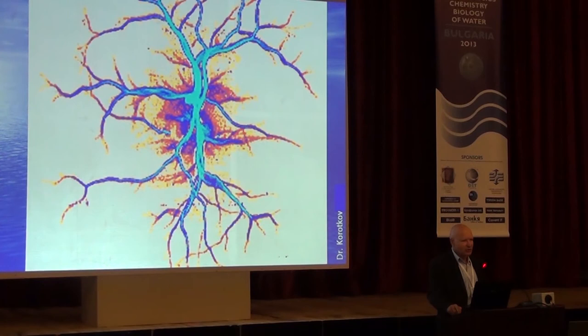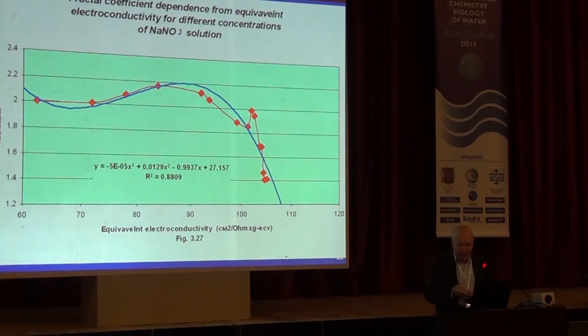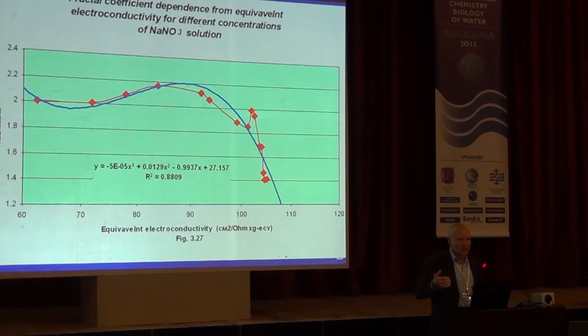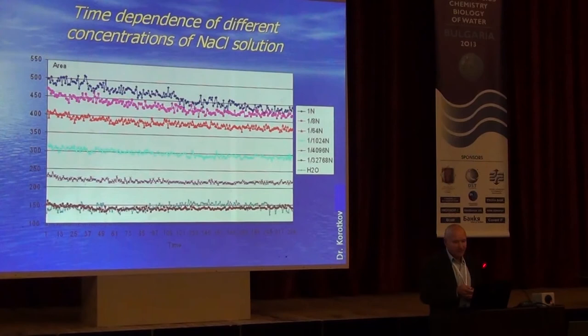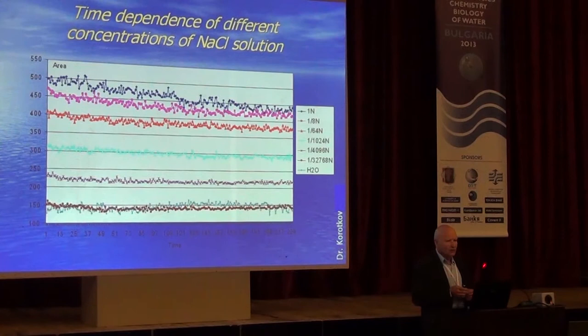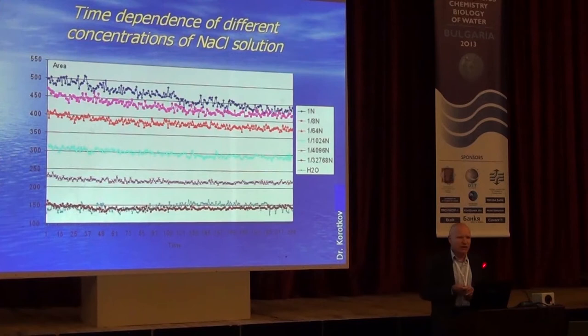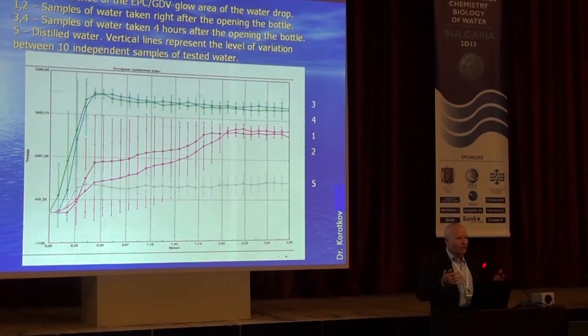There is dependence on conductivity, which is clear, but in the area where we are working — high dilutions — we are not dependent on it. We have many technologies to study water conductively. We also see very clear dependence on concentration, and can detect signal down to very low concentrations, below the Avogadro number. We also see transformation of a particular liquid or water under the influence of the environment — this experiment is time dynamic.